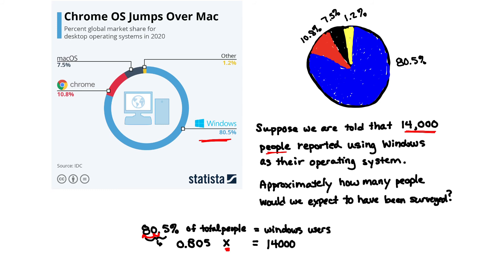This is the math equation we can use to solve this problem. To solve it, we simply divide both sides of our equation by 0.805. That gives us our value for X — the total number of people in this particular survey. X is 14,000 divided by 0.805, which is roughly 17,391.3 people. Since we can't have a fractional person, we round up to approximately 17,392 people.